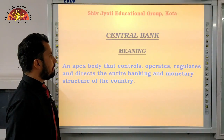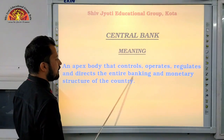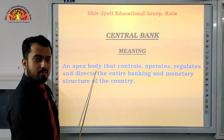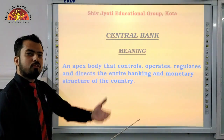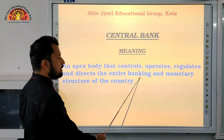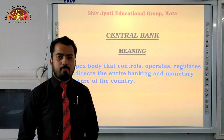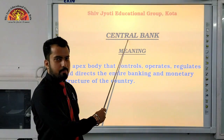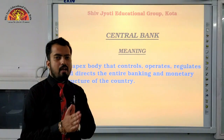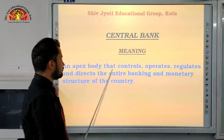Let us first discuss the meaning of central bank. The central bank is an apex body that controls, operates, regulates, and directs the entire banking and monetary structure of the country. Being the apex body means it can control all other commercial banks and financial or monetary institutions. In simple words, all commercial banks running in the country are under the control of the central bank — that is why it is known as the apex body.